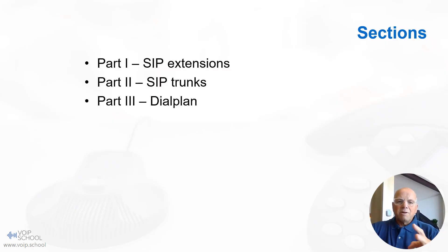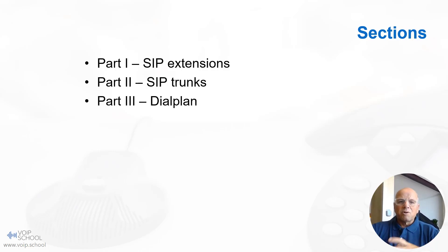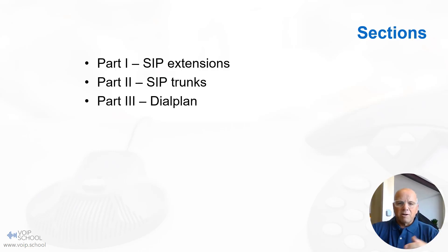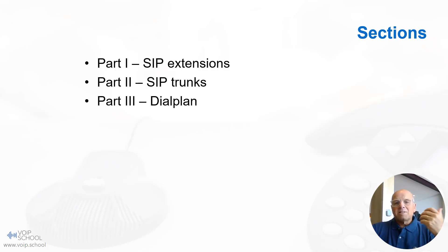In this section, we will cover three main parts. Part one focuses on SIP extensions, which allow devices and soft phones to register and make calls through the Asterisk system. Part two covers SIP trunks, which provide connectivity to external telephony networks and service providers. And finally, in part three, we are going to explore the dial plan — the core component that handles call routing and processing within Asterisk. Understanding these three areas is crucial for configuring and managing a robust and flexible Asterisk PBX solution.